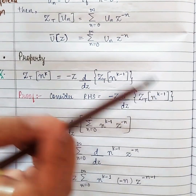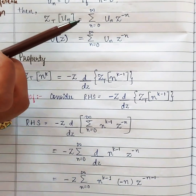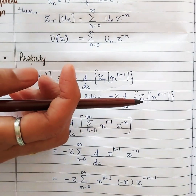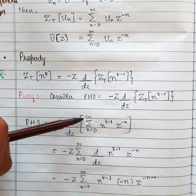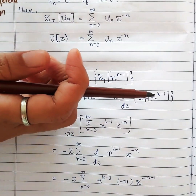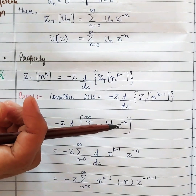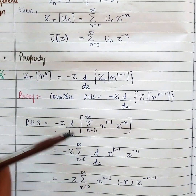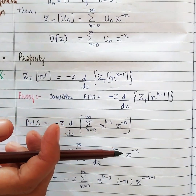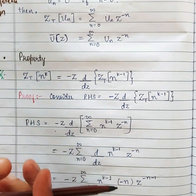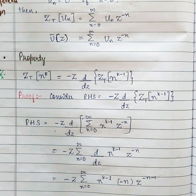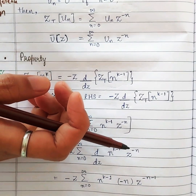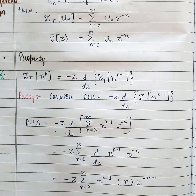So we write minus z times d/dz of Z{n^(k−1)}. We use the formula: Z{u_n} = summation n=0 to infinity of u_n times z^(−n). Writing it out: minus z times d/dz of summation n=0 to infinity of n^(k−1) times z^(−n). Taking the summation outside and differentiating with respect to z: n^(k−1) is a constant, and differentiating z^(−n) gives minus n times z^(−n−1).